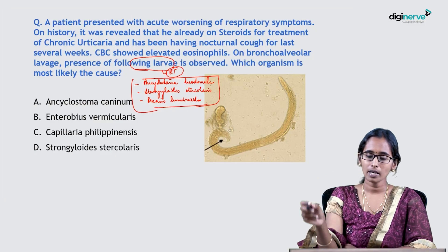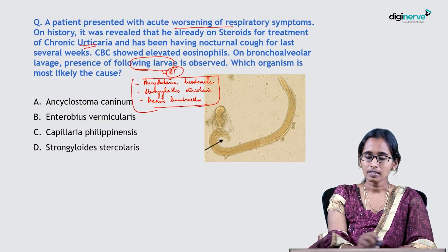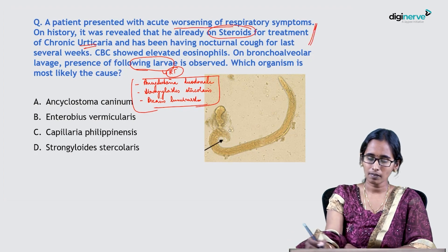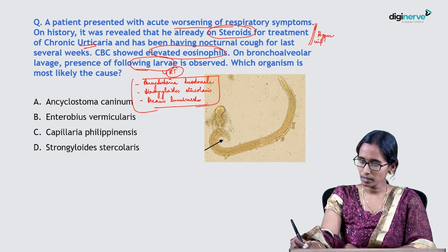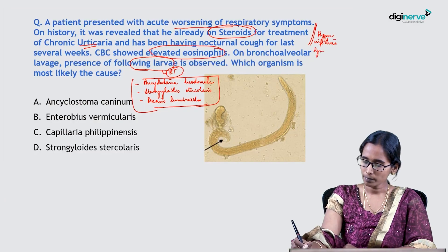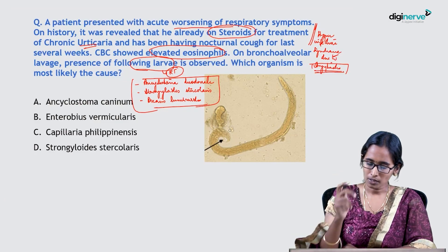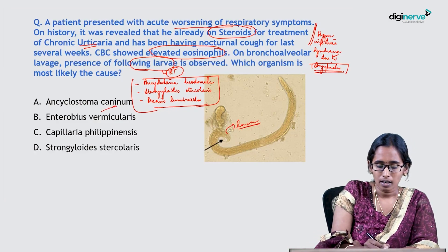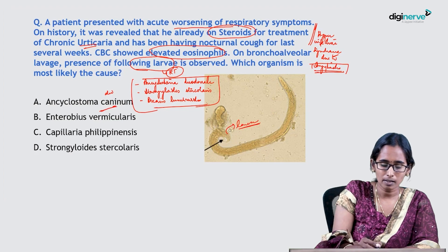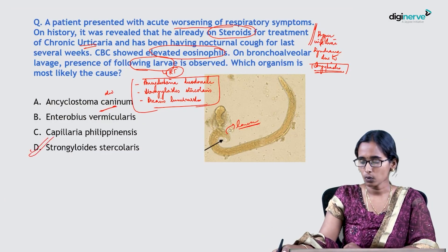The patient is having acute worsening of respiratory symptoms, is on chronic steroids, and has elevated eosinophils. These things point towards the patient having hyperinfection syndrome due to Strongyloides. This image shows the larva of Strongyloides. The option mentioned is Ancylostoma caninum, not Ancylostoma duodenale, so the best answer is Strongyloides stercoralis.